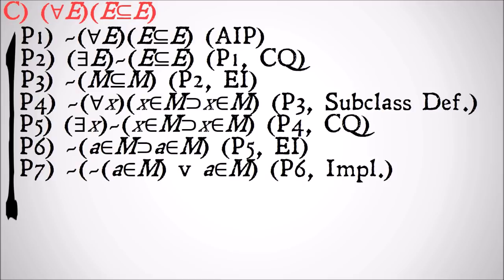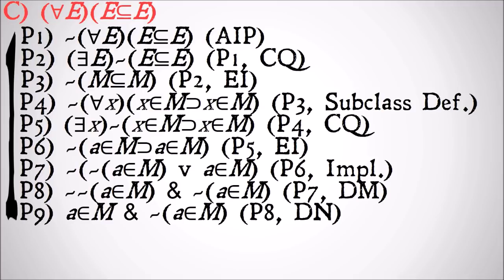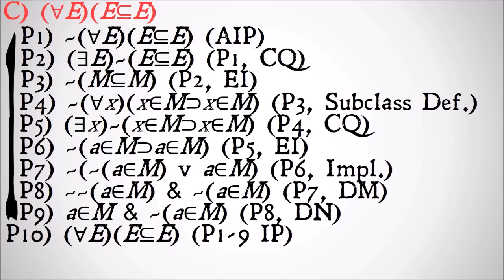We'll use implication to split out that implication sign into a disjunction. We'll then use De Morgan's law to distribute the negation across, and then double negation just gets us an outright contradiction: A is a member of M and A is not a member of M. This is a contradiction, so we can conclude from 1 through 9 in indirect proof that for all E, E is a member of E. Q.E.D.